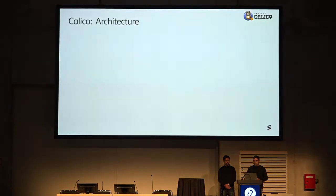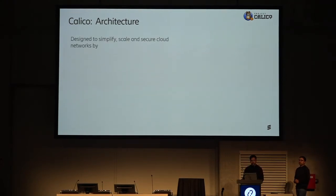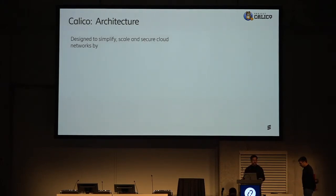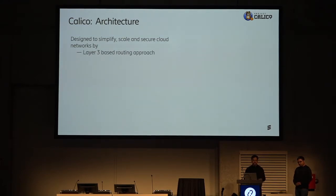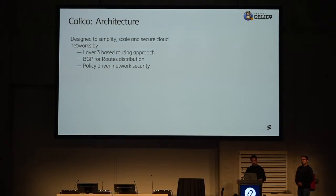Now let's talk about Calico. Unlike all the other solutions, Calico does not use any overlay. It simply uses Layer 3 IP and is meant to simplify, scale, and use telco-grade protocols including BGP. It uses a Layer 3 based routing approach with BGP for route distribution, avoiding the overhead of Layer 2 VXLAN. It is policy-driven for network security. The overall architecture includes Calico CTL, a command-line tool to run and stop all Calico components, and a key-value store which can be either etcd or the Kubernetes API data store. Orchestrator plugins such as OpenStack, Kubernetes, and OpenShift are supported.